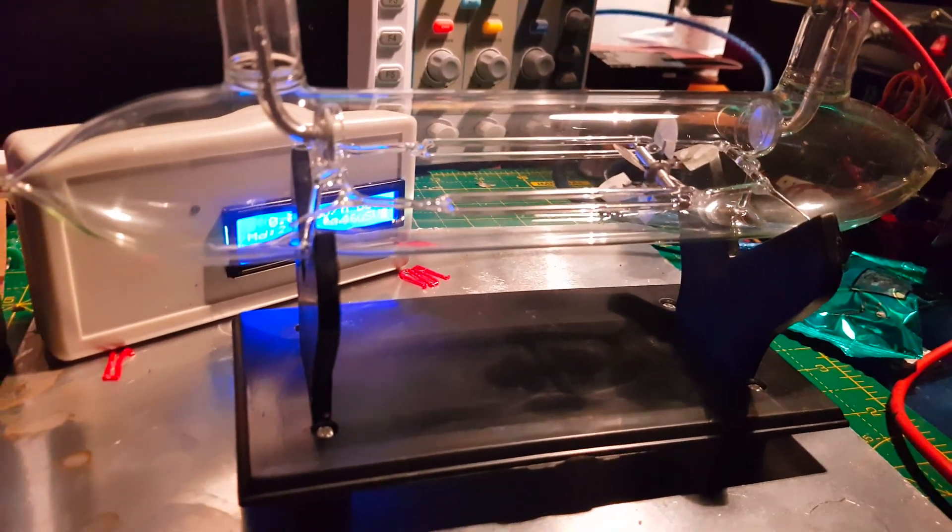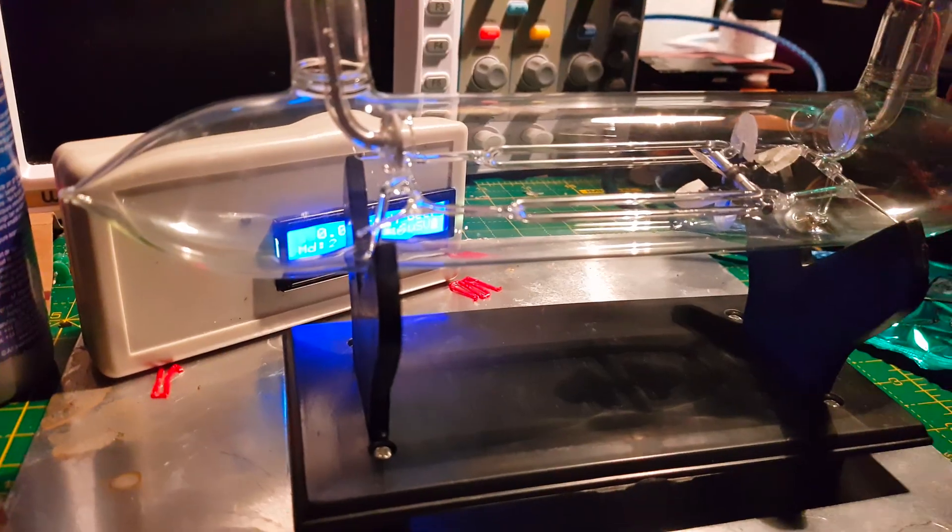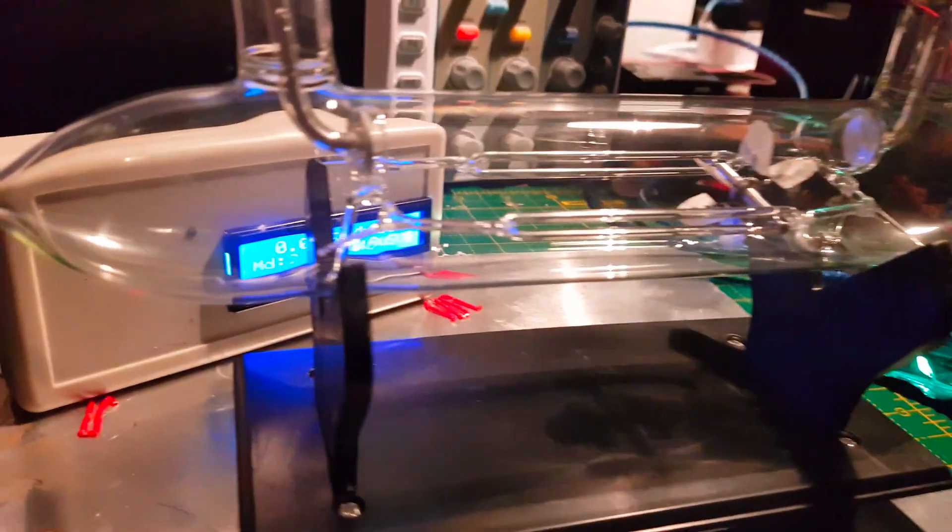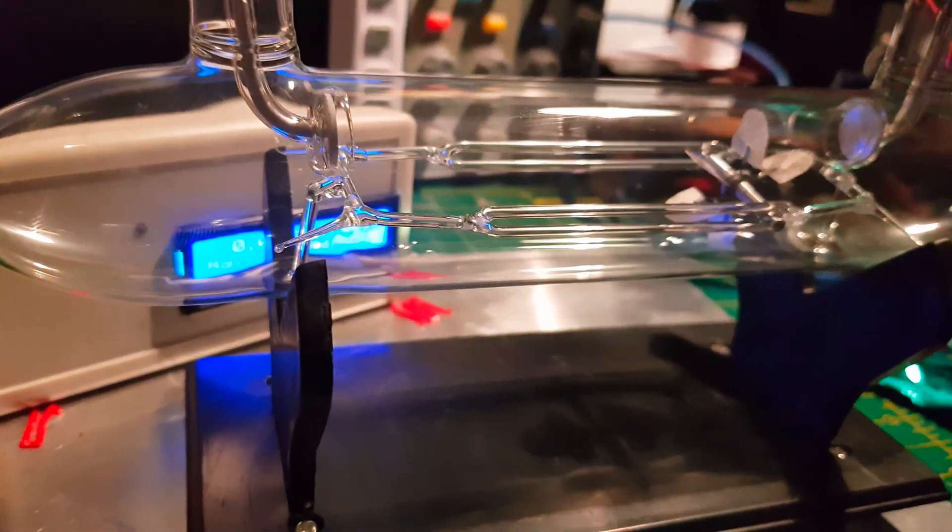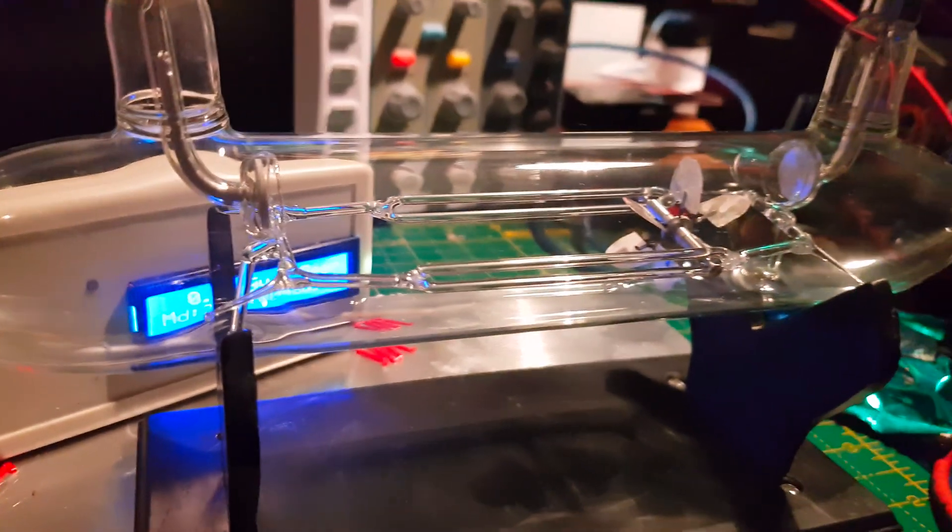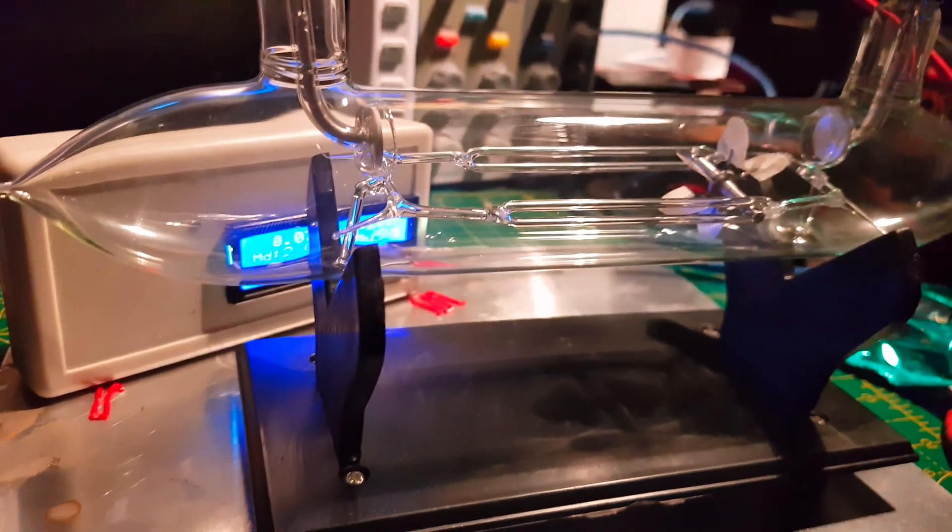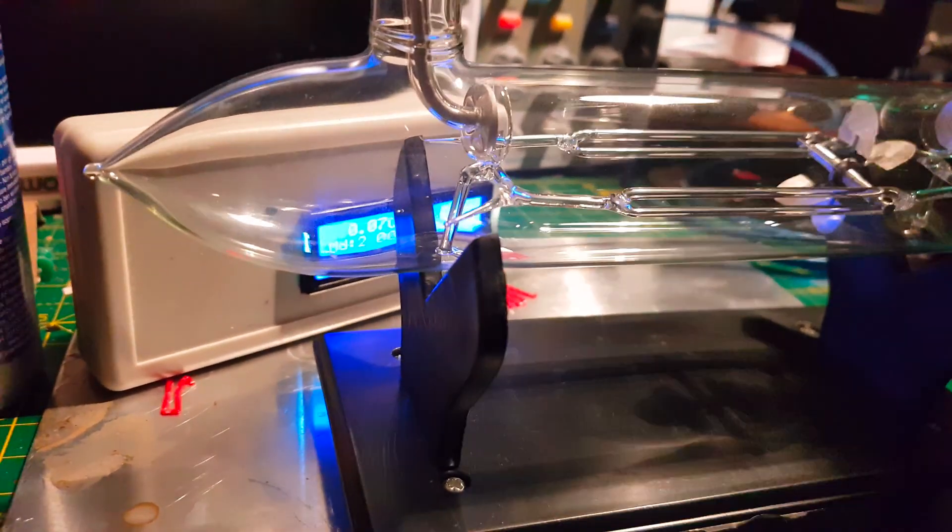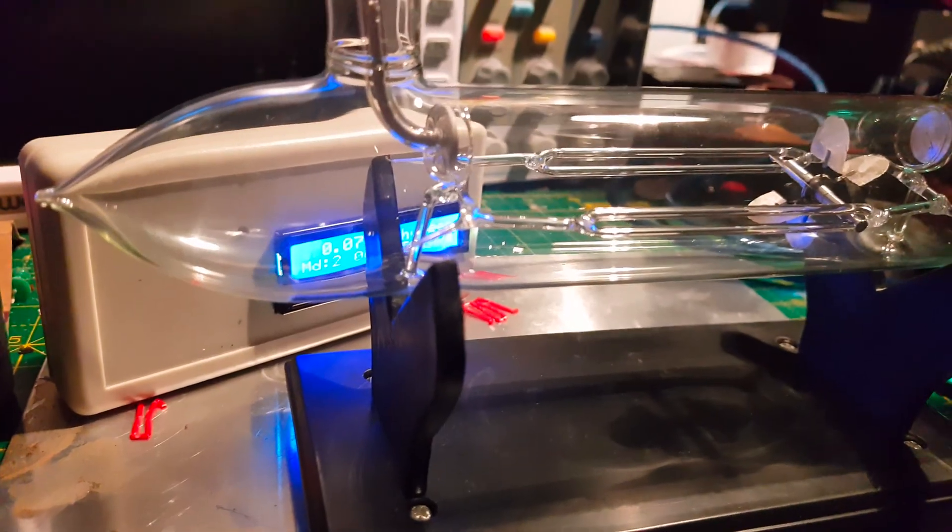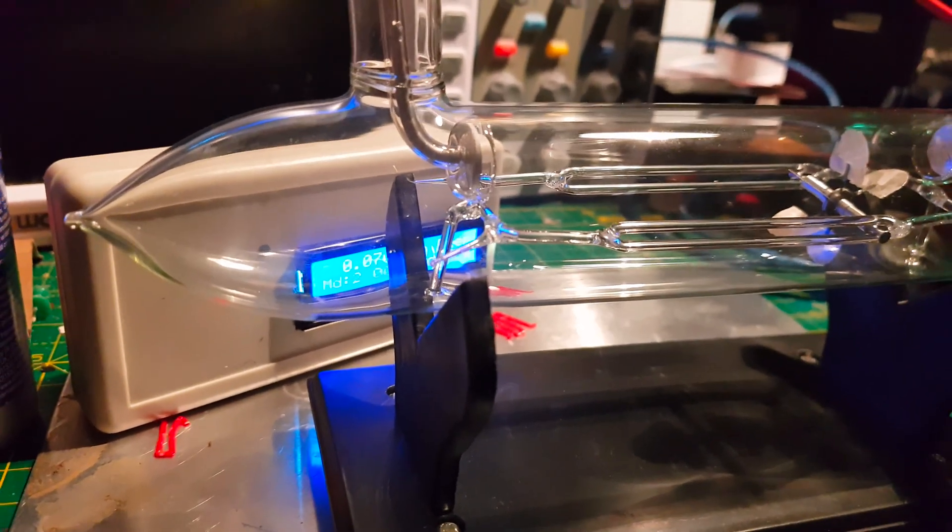A Crookes paddle wheel experiment tube, which is probably originally from about 1890. It's to prove that electrons have mass and actually can move the paddle wheel like water has the same sort of effect on a water wheel.